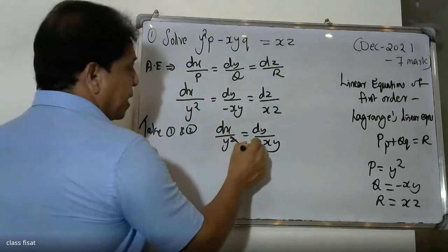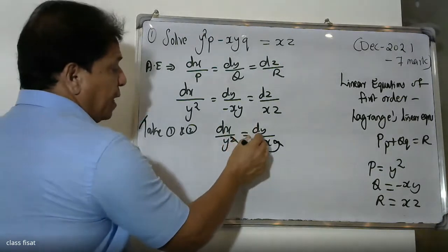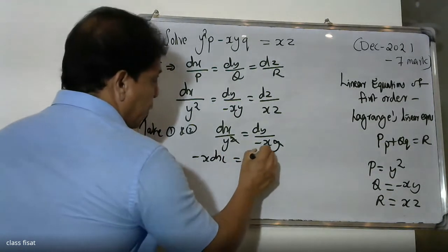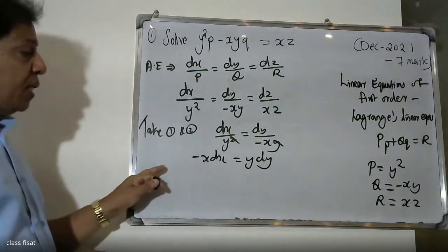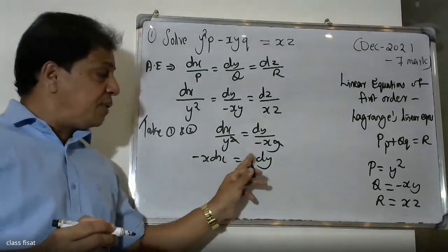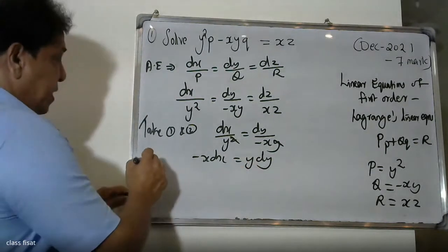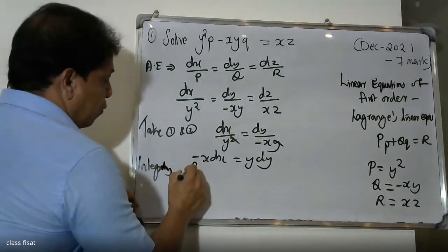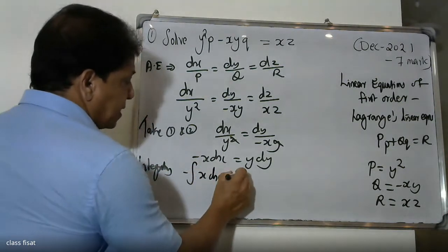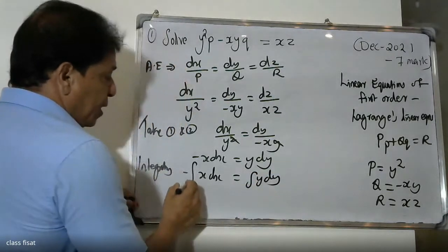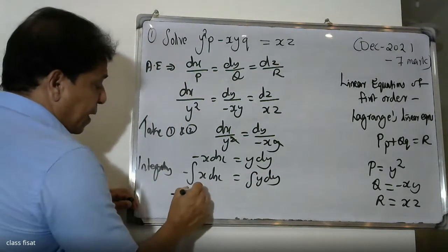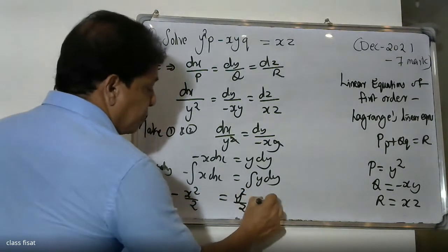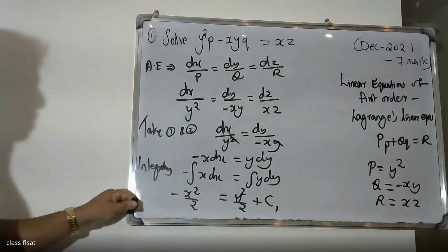We can cancel y, giving dx by y equals dy by minus x. Separating variables: minus x dx equals y dy.